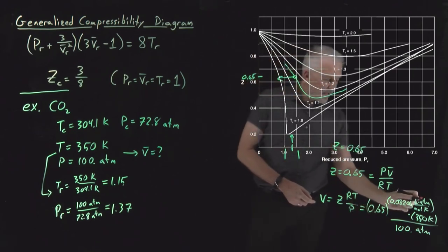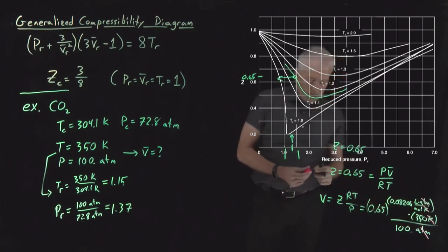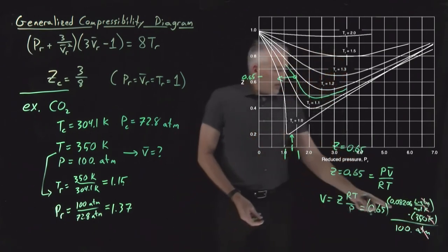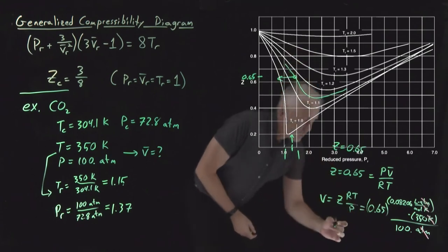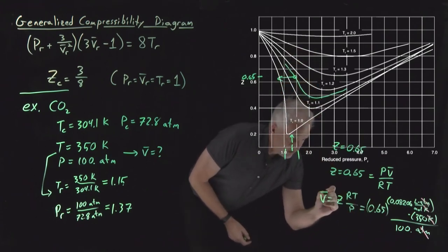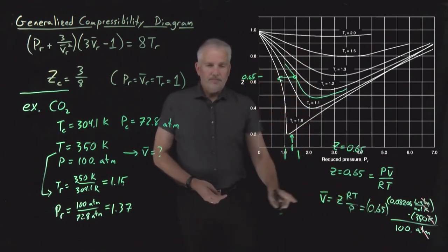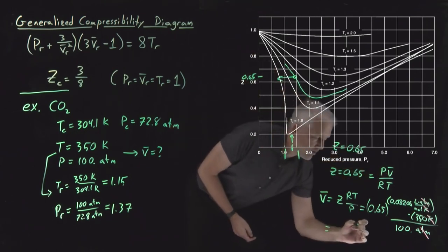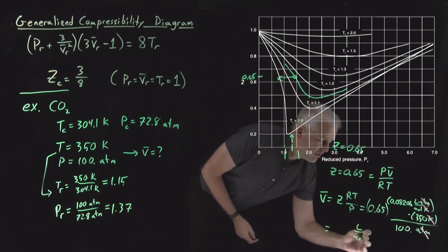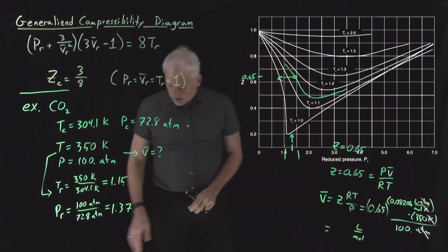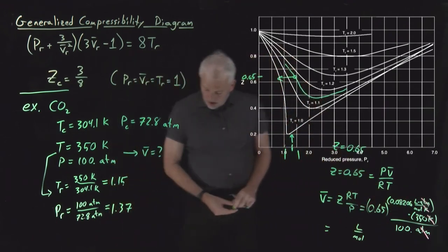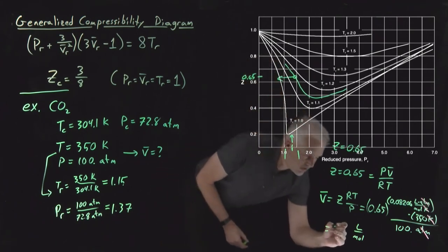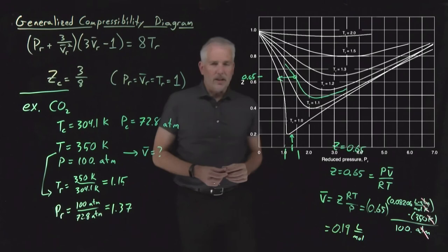And just to double-check the units, compressibility factor is unitless, atmospheres cancel atmospheres, Kelvin cancel Kelvin. And I'm left with liters over moles, which is good. That should be, in fact, it reminds me that I have a molar volume that I'm calculating. My molar volume should work out in units of liters per mole. And if I plug these numbers into a calculator, what I find is that the result is 0.19 liters per mole.